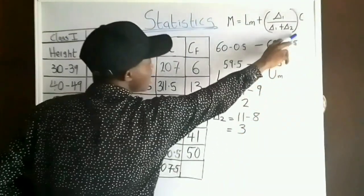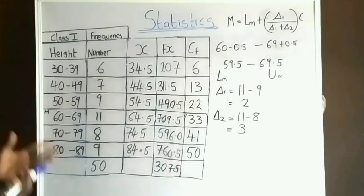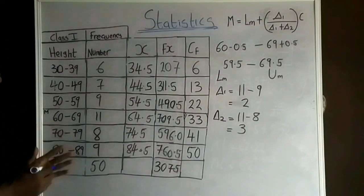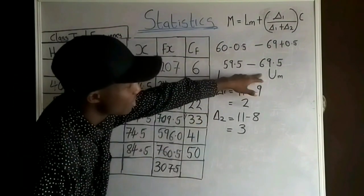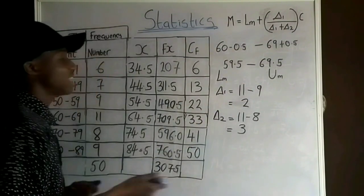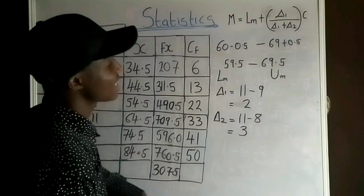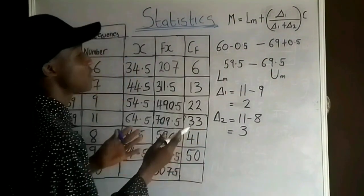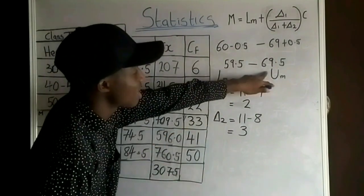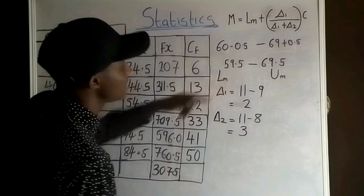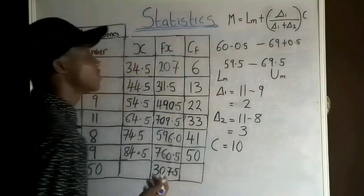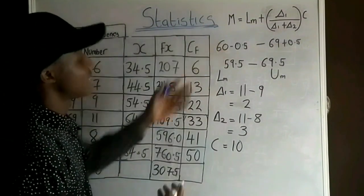C is the class width, calculated as the difference between the upper and lower class boundaries of the modal class: 69.5 − 59.5 = 10. So C = 10.